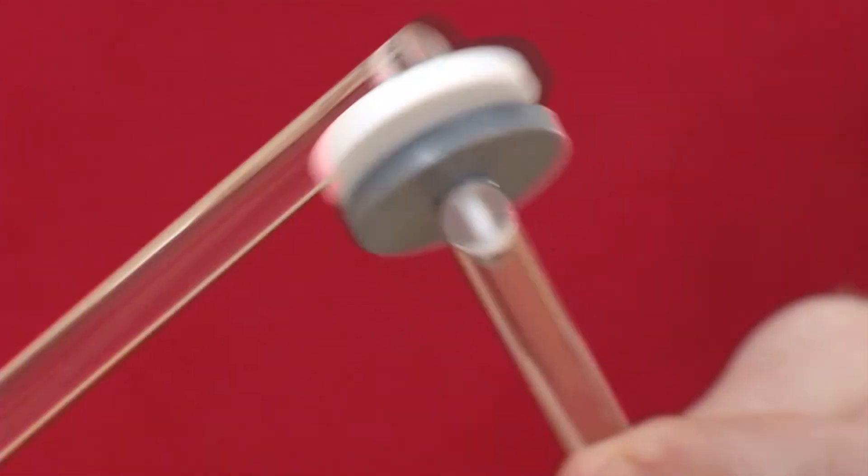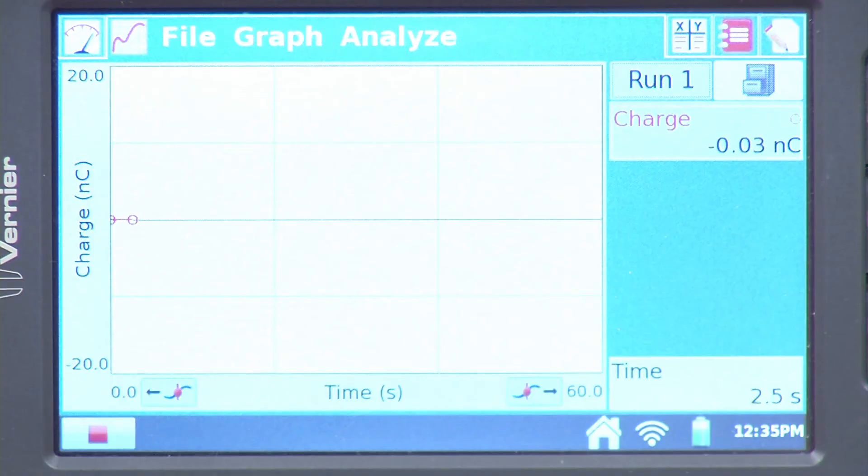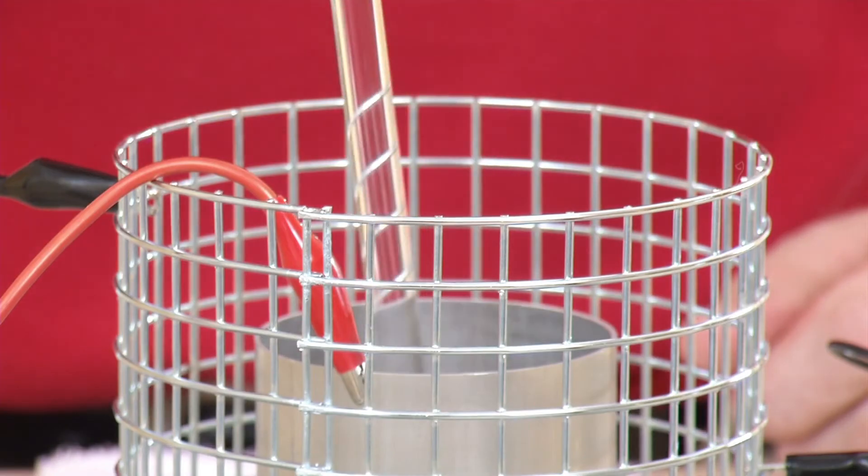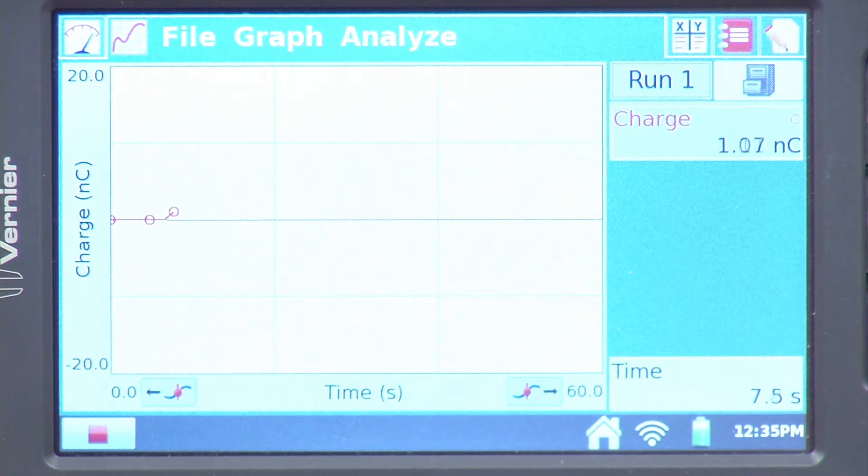and then rub the charge separators together. At first, I will insert the white nylon charge separator into the pail, and then I will take it out.